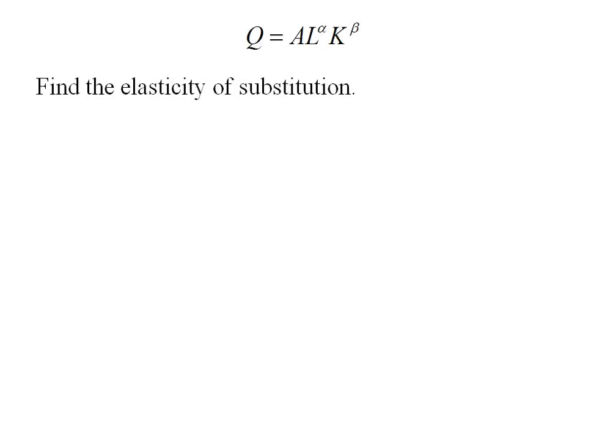Let's find the elasticity of substitution for a general Cobb-Douglas expression: A times L to the alpha, K to the beta. Sigma is our elasticity of substitution and it's the ratio of the percent change in the capital-labor ratio to the percent change in the marginal rate of technical substitution.